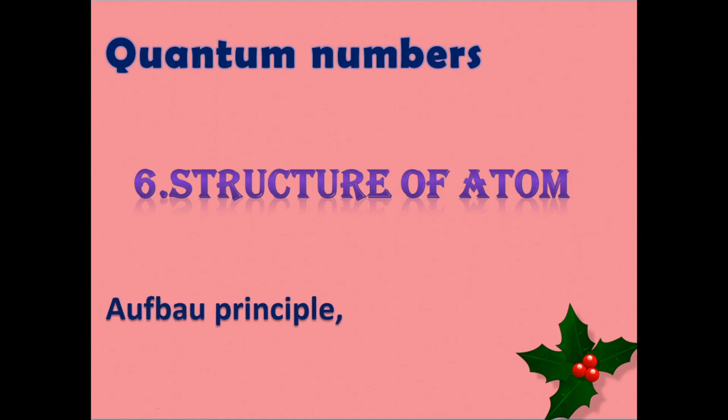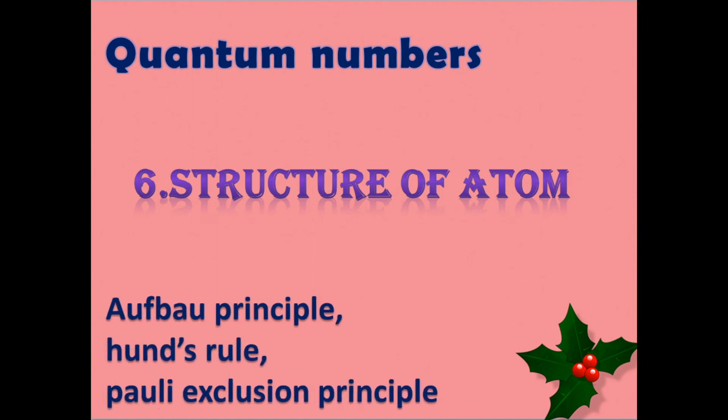Next are the principles: Aufbau principle, Hund's rule, and Pauli exclusion principle. These principles are also important — they may ask for 2 marks or 1 mark. Electronic configuration is also important; if they ask electronic configuration for 1 mark or 2 marks you can easily gain those marks. The next 6 chapters' important topics will be covered in my next video.